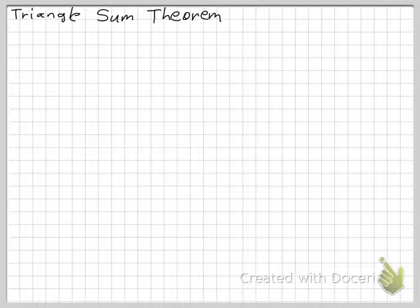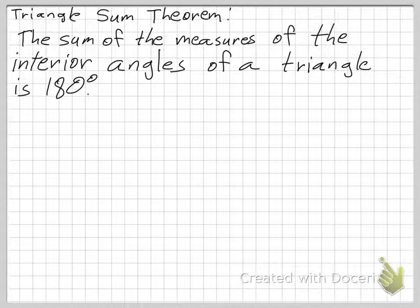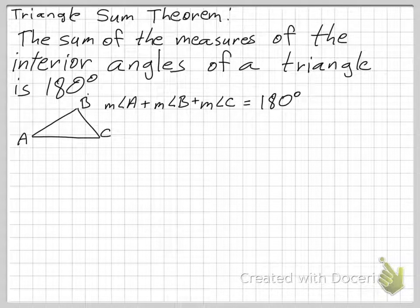New concept: the Triangle Sum Theorem. The Triangle Sum Theorem states that the sum of the measures of the interior angles of a triangle is 180 degrees. So for a triangle with vertices A, B, and C: the measure of angle A plus angle B plus angle C equals 180 degrees.